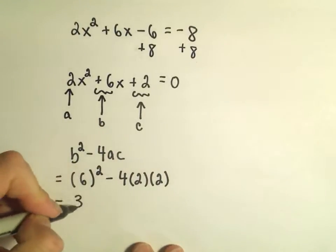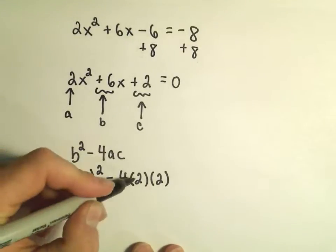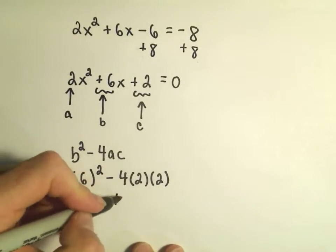So, for the discriminant, 6 squared is going to be 36. 4 times 2 is 8. 8 times 2 is 16.